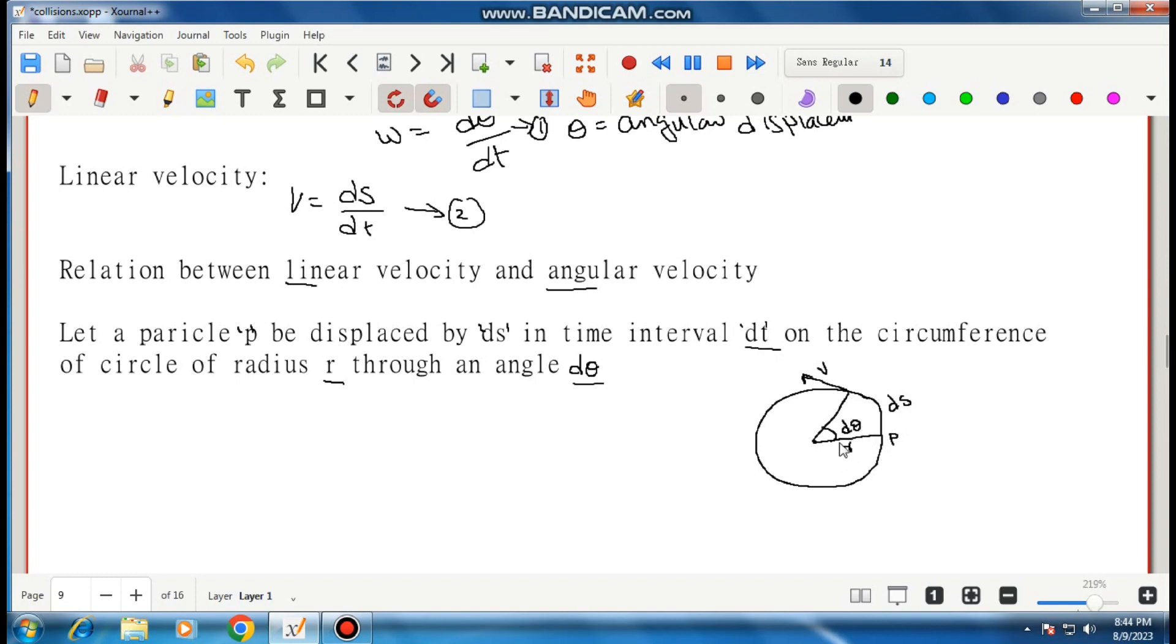is d theta. Now we write the formula: arc equals radius into angular displacement. So here, arc ds equals radius r times angular displacement d theta. This is equation